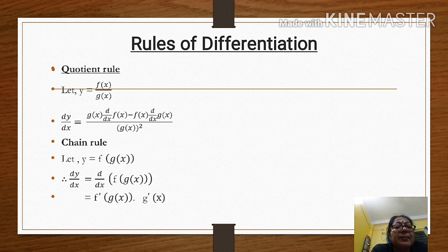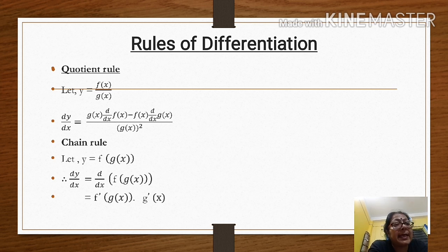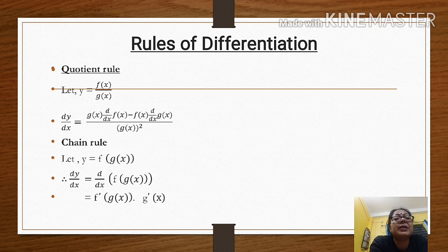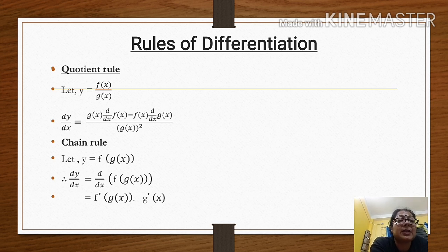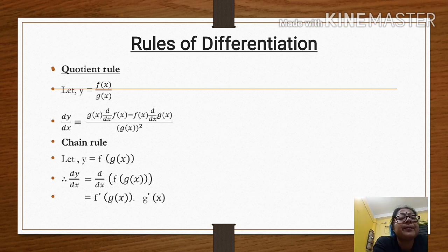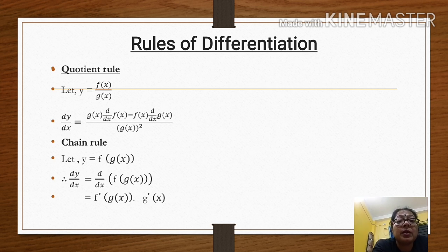Next is the chain rule. Suppose y is equal to a function of another function, that is f of g(x). The derivative dy/dx equals f'(g(x)) multiplied by the derivative of g(x). In today's video I am going to discuss some problems on chain rule.